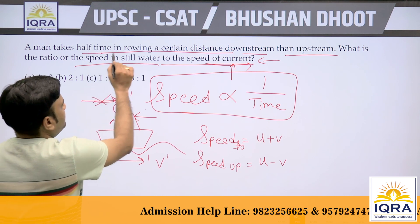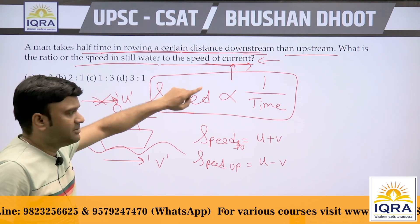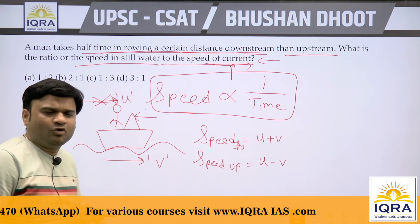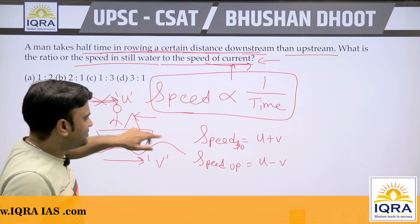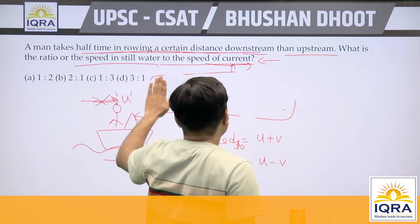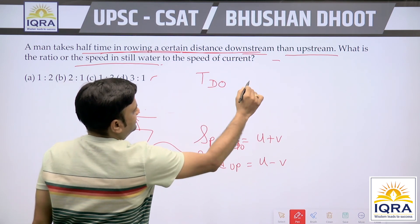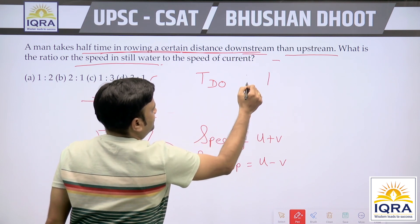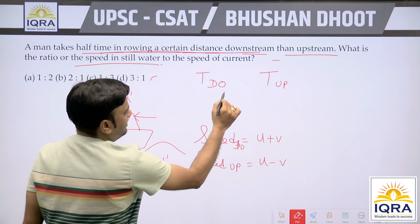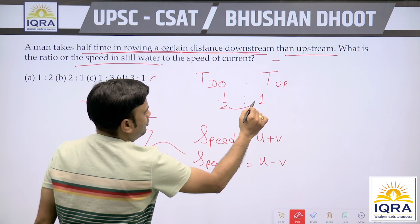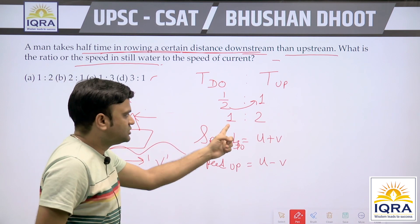The problem states that a man takes half the time rowing downstream. The information is about time, but the question is about speed. If you double your speed, your time reduces to half. So the ratio of time downstream to time upstream is 1 to 2. Since speed is inversely proportional to time, the ratio of speed downstream to speed upstream becomes 2 to 1.